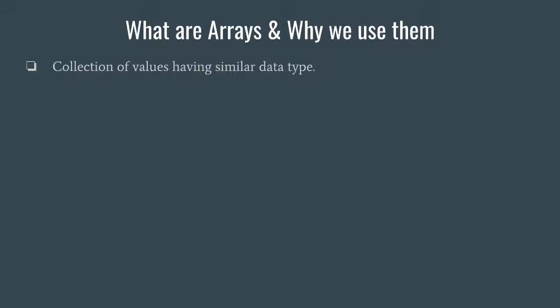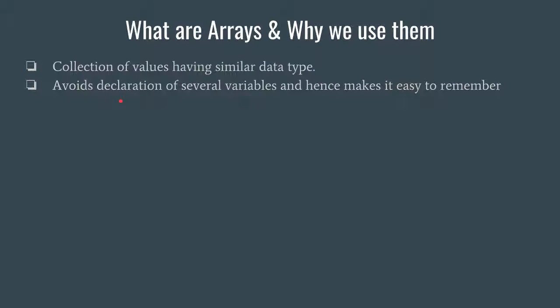Suppose if you want to store the marks of n students in a subject say physics, then you cannot declare variables like m1, m2, m3 and till m50 — that is not a correct way to do it. So instead we will use a simple array and store marks into that array. Arrays avoid the declaration of several variables and also make it easy to remember your variable names.